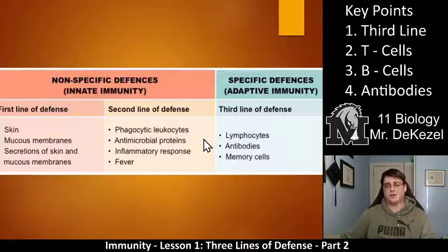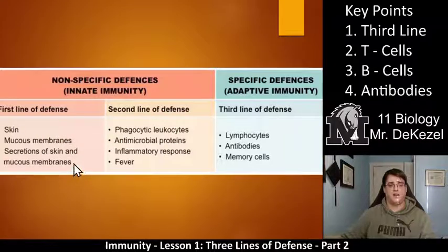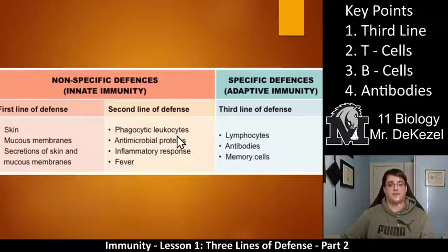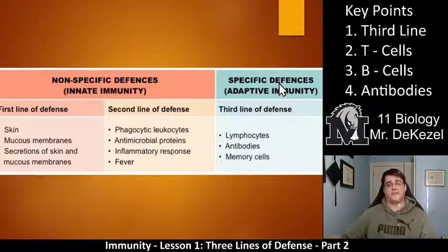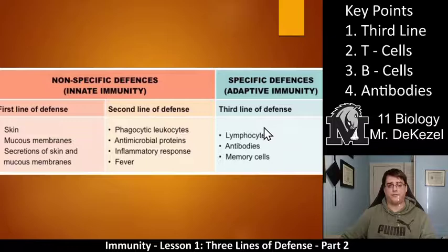A little recap: the first and second lines of defense are non-specific — they defend against anything. The first line includes skin, mucous membranes, hair, and secretions to stop things from getting into your body. The second line is the inflammatory response, like fever, and phagocytic leukocytes — the macrophages that do phagocytosis. Then we have the specific defenses, or the third line, with lymphocytes — B-cells and T-cells — antibodies, and memory cells to remember that foreign invader.